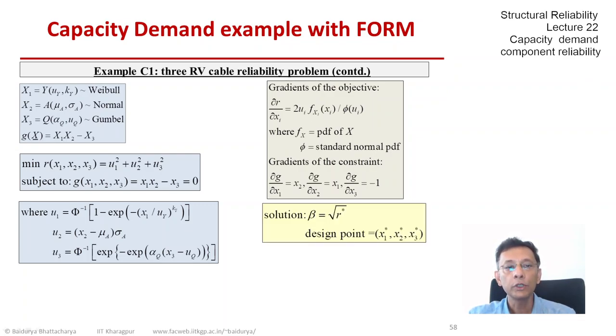Now, our solution would be, if we can find the minimum of R, our beta would be the square root of that minimum, so root of R star. And the design point, automatically, since we are operating in X space, would be X1 star, X2 star, X3 star. If you want to find U1 star, we have to use the map that you see on the left. So U1 is phi inverse of 1 minus exponential, so on. So that expression has to be used if we want to find the U1 star, the U2 star, and the U3 star, one by one.